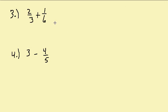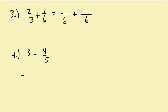Let's take a look at another one. We don't have a common denominator here, so we need to find a common denominator between 3 and 6. We're looking for the smallest number that 3 and 6 will divide into evenly. The common denominator is 6, because 3 goes into 6 two times and 6 goes into 6 one time.